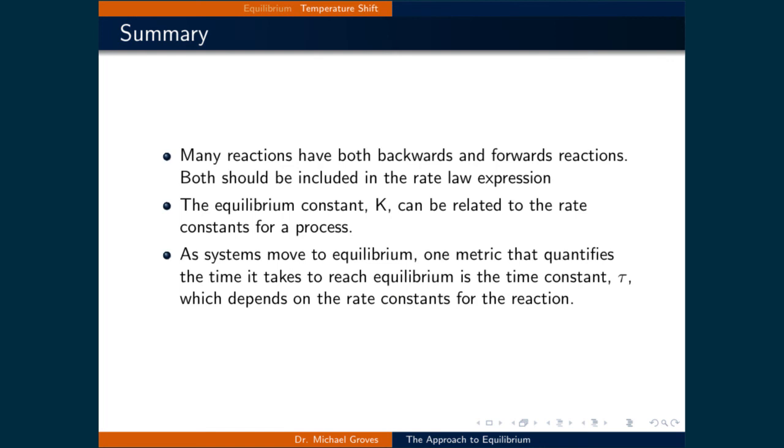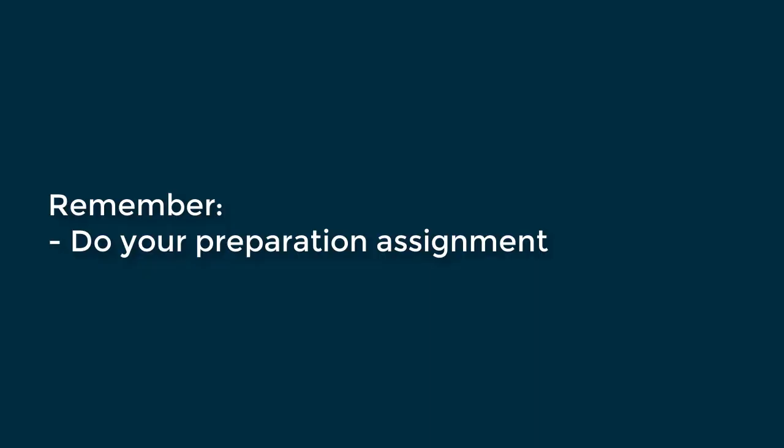In summary, many processes must take into account both backwards and forwards reactions. Both should be included in the rate law expression. Furthermore, the equilibrium constant K can be related to the rate constants for a process. And finally, as systems move to equilibrium, one metric that quantifies the time it takes to reach equilibrium is the time constant, denoted as tau, which depends on the rate constants for the reaction.